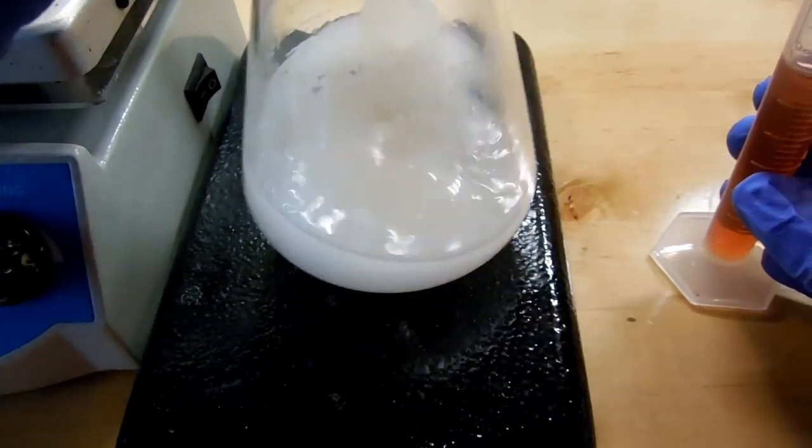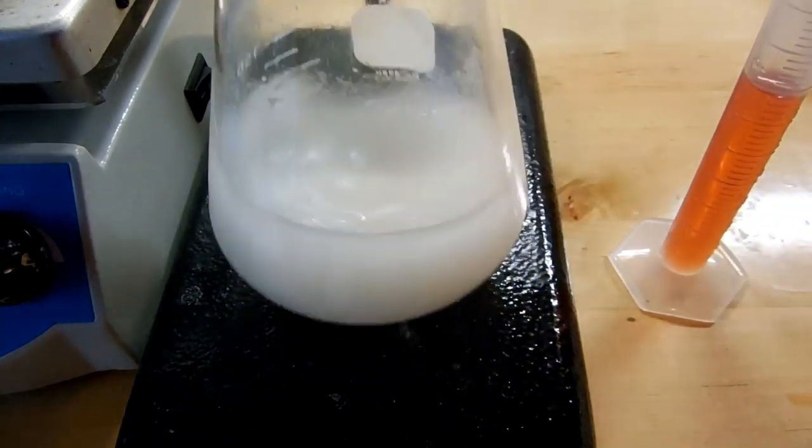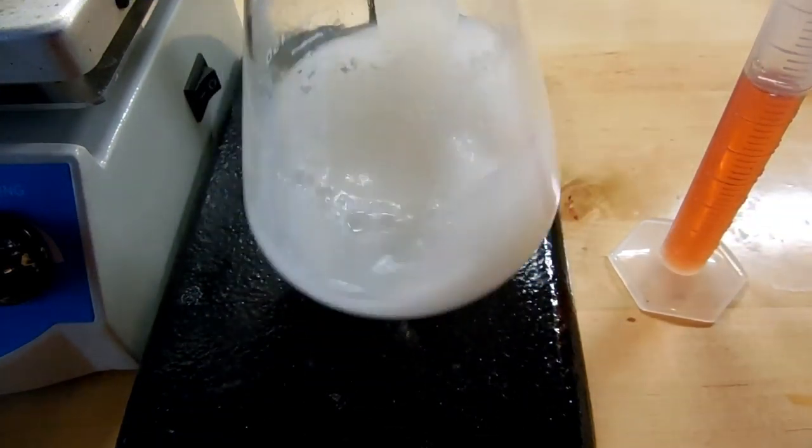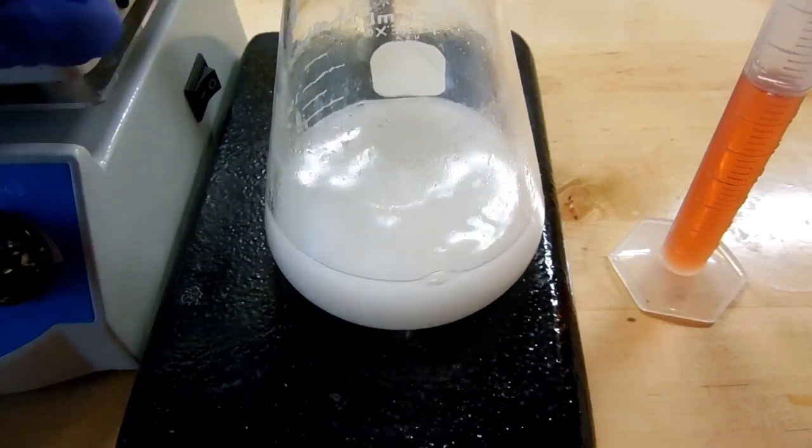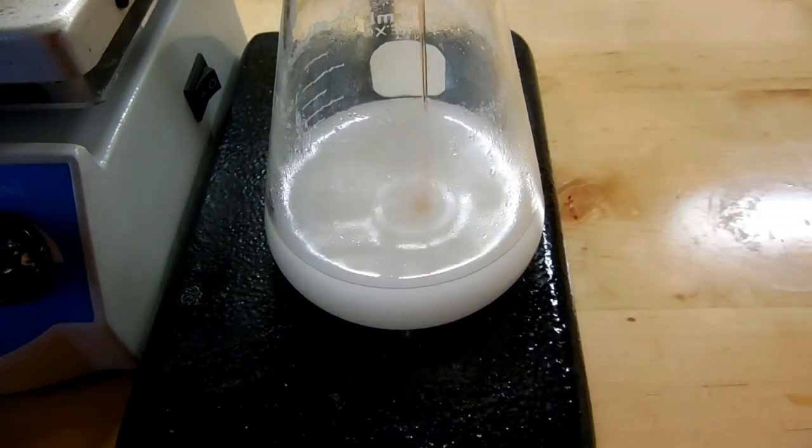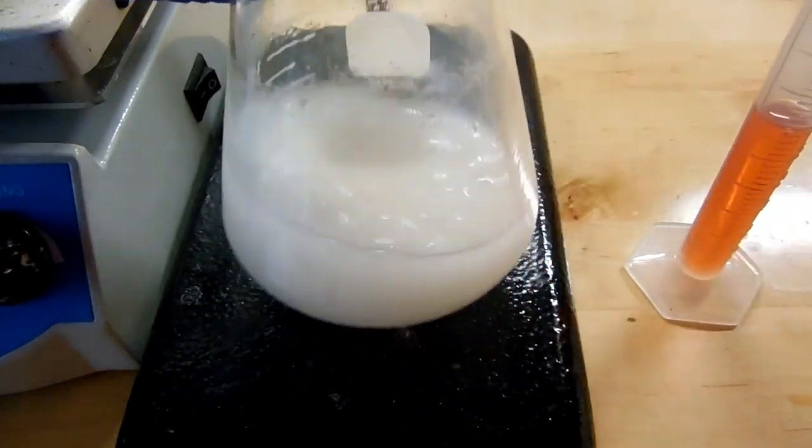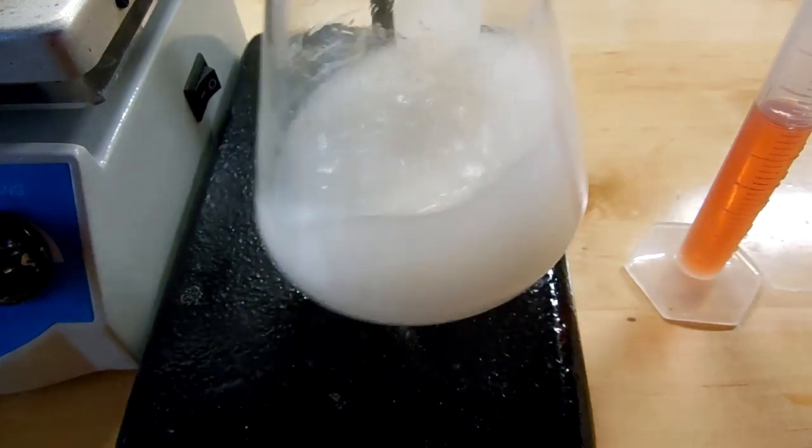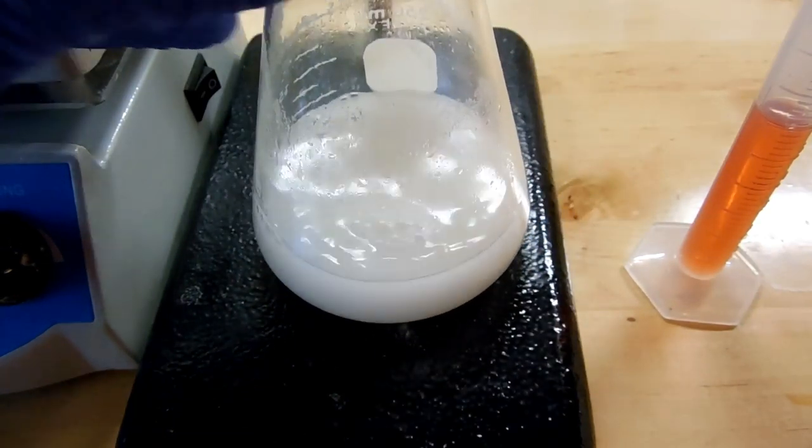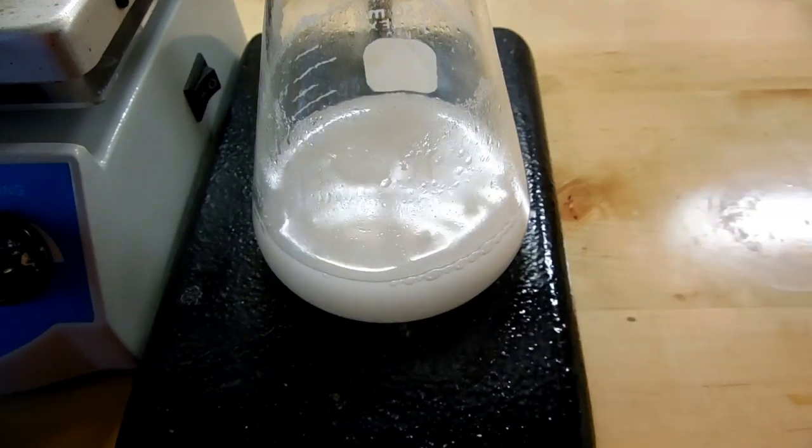Every time I add acid it produces more bubbles than you would expect from just pouring one liquid into another. That's because it's actually making localized boiling right where I pour it. The original procedure called for 10 milliliters of acid but since it's a catalyst I dropped that to 8. My acid is red because it's drain cleaner grade with dye or dissolved carbon.